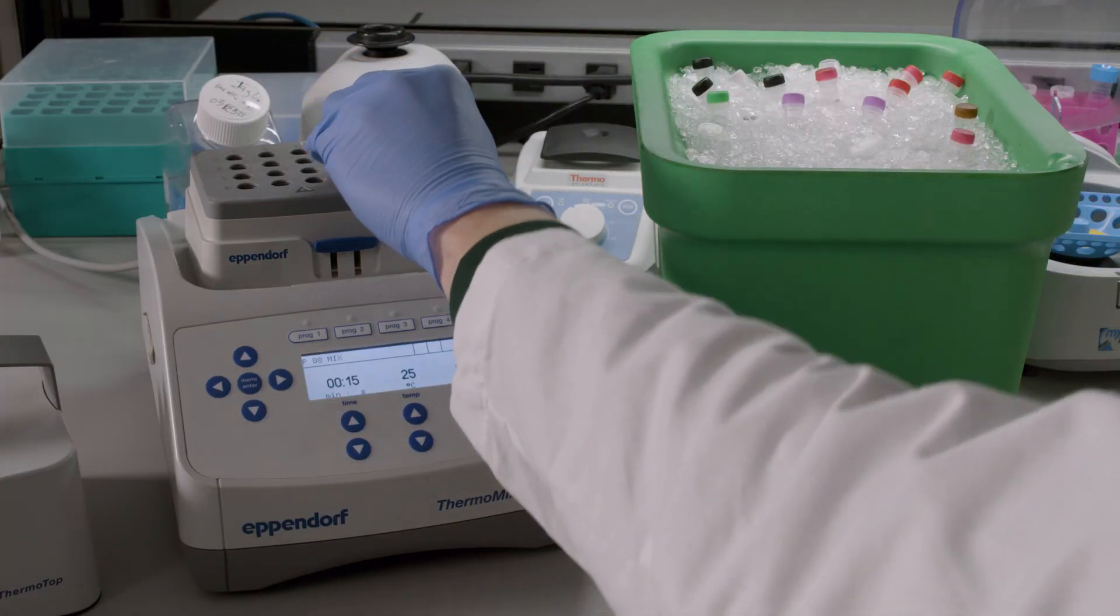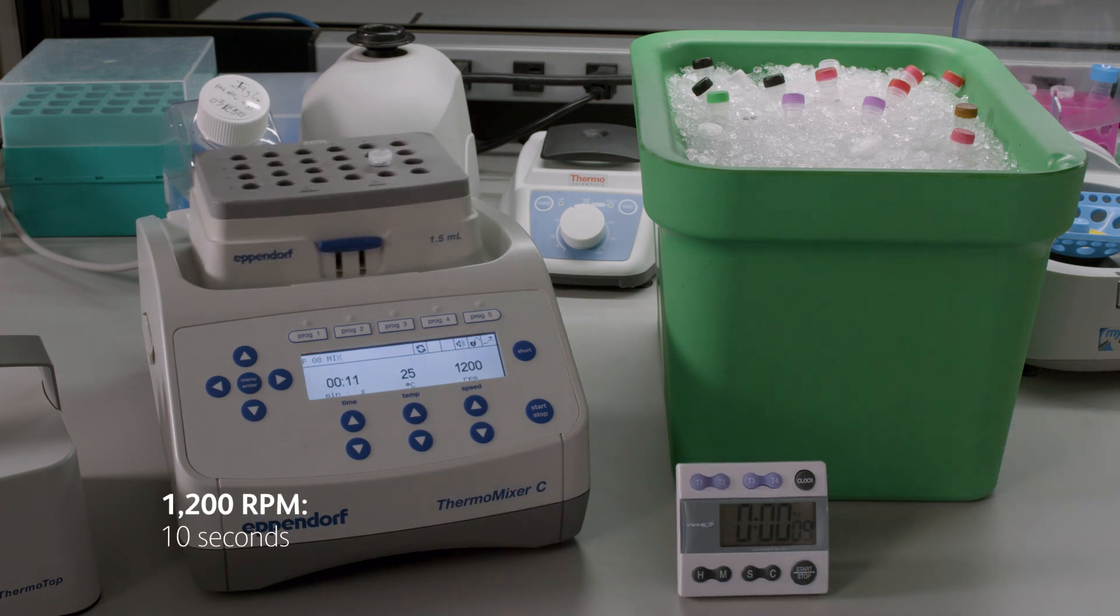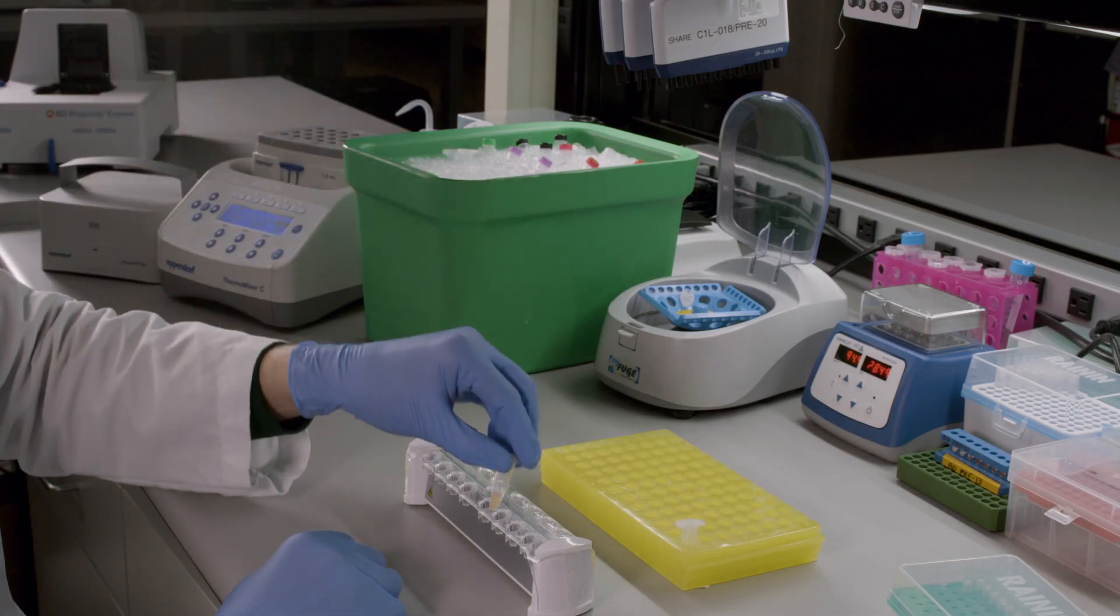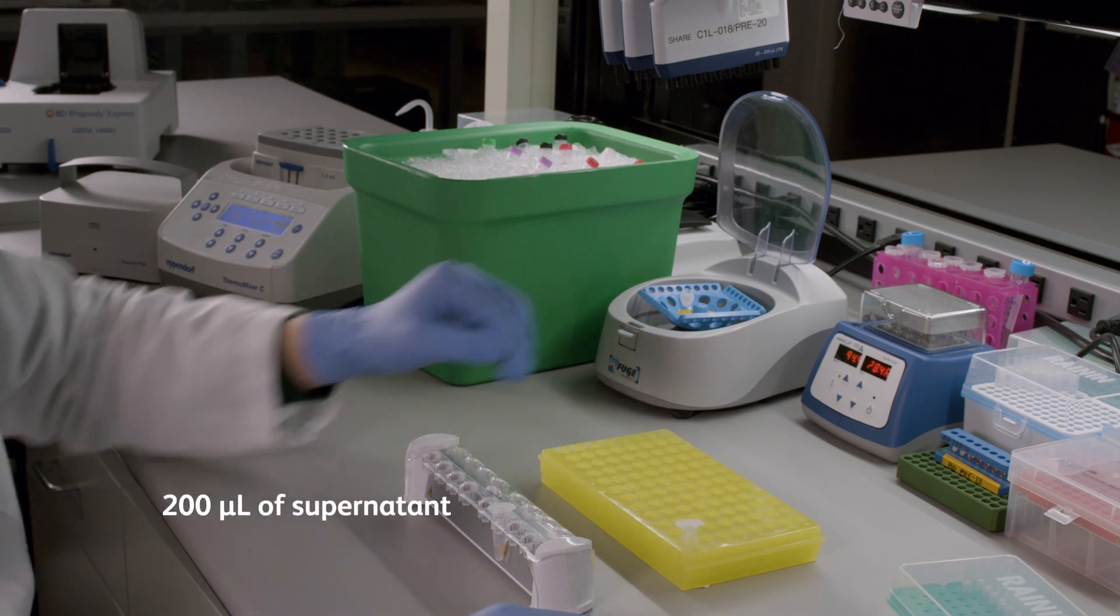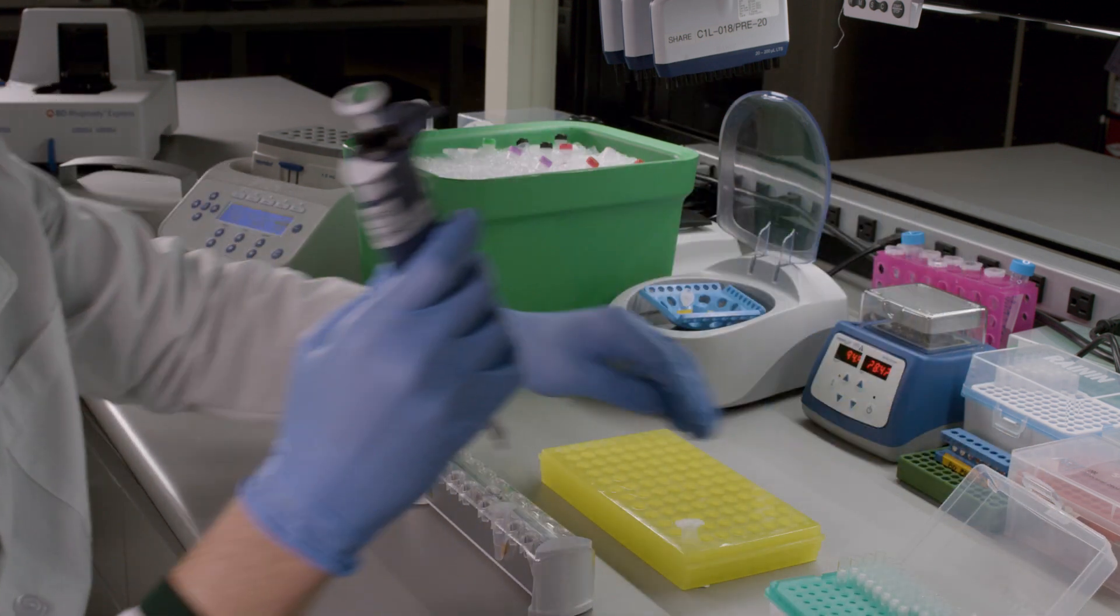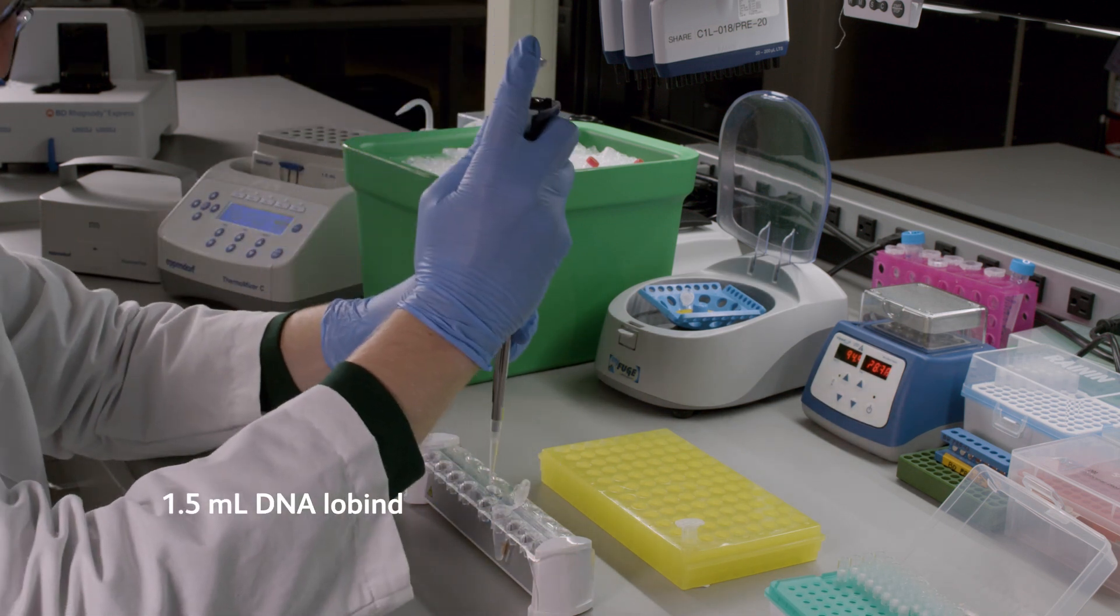Next, briefly shake the tube on a thermomixer set at any temperature at 1200 RPM for 10 seconds to resuspend the settled beads. Then, place the tube on a magnet and wait 30 seconds for the beads to bind. Immediately transfer 200 microliters of the supernatant containing the RPE products into a newly labeled 1.5 milliliter DNA low bind tube and store on ice.